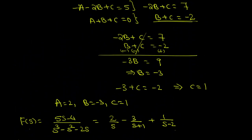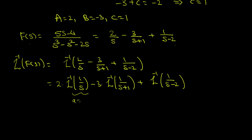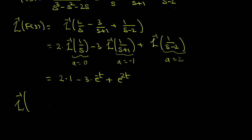Using the hint that the inverse Laplace of n factorial over (s minus a) to the power of (n plus 1) equals e to the power of at times t to the power of n, with n equals 0, we get the inverse Laplace of 1 over (s minus a) equals e to the power of at. Here a equals 0, a equals minus 1, and a equals 2 respectively. Therefore the result is 2 times 1, minus 3 times e to the power of minus t, plus e to the power of 2t. Hence the inverse Laplace of (5s minus 4) divided by (s cubed minus s squared minus 2s) equals 2 minus 3e to the power of minus t plus e to the power of 2t.